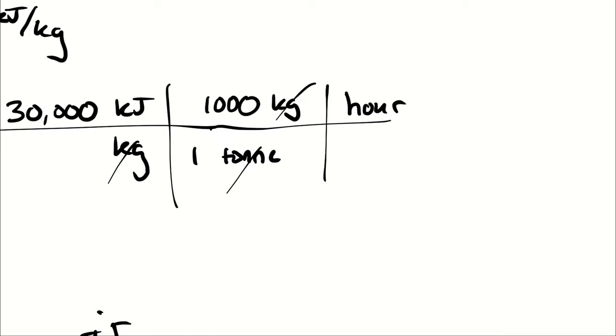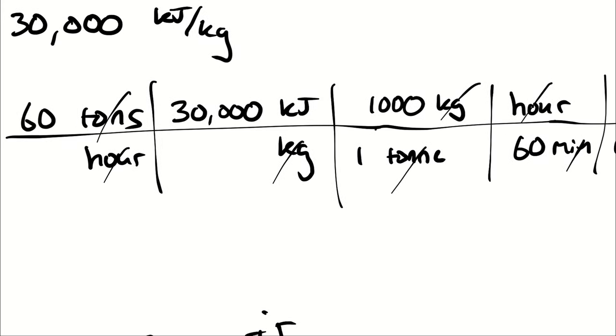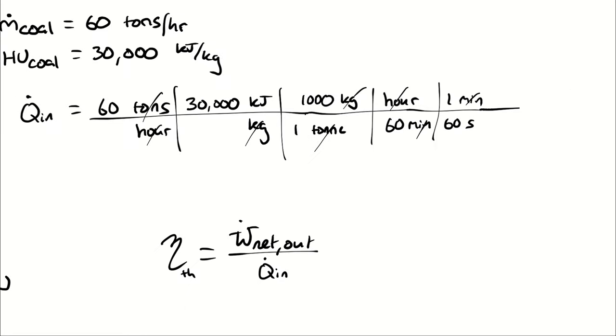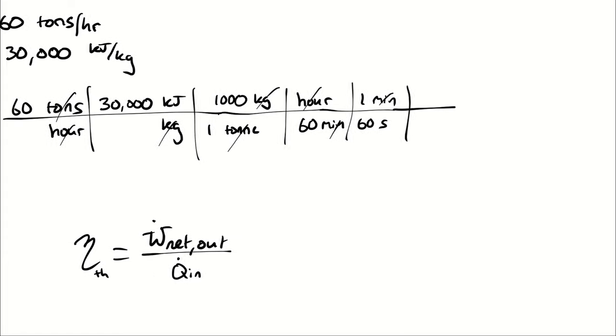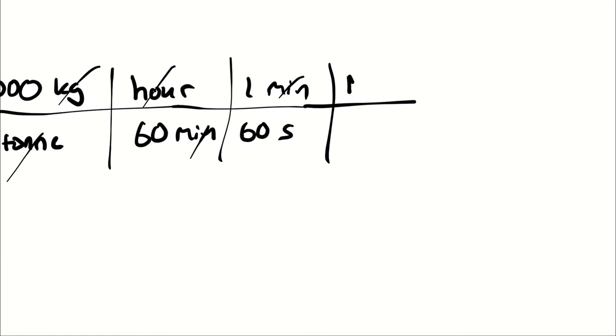Then I recognize 1 hour is 60 minutes, and 1 minute is 60 seconds. That will give me kilojoules per second. And I want megawatts, which is a megajoule per second. And 1 megajoule is 1,000 kilojoules.